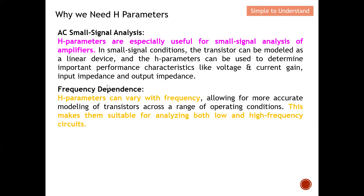The last reason is frequency dependence. H parameters can vary with frequency, which allows for more accurate modeling of transistors across a range of operating conditions. This makes them suitable for analyzing both low and high frequency circuits. These are the five reasons why we need H parameters.